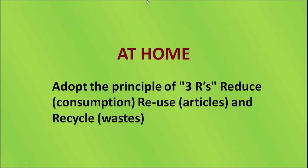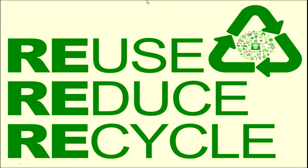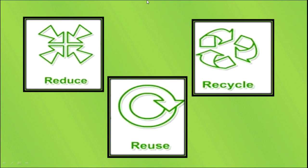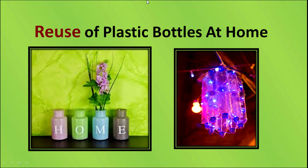At home we can adopt the principle of the three R's: reduce consumption, reuse articles, and recycle wastes. The three R policy helps to prevent environmental pollution. The three R's are reuse, reduce, and recycle. We can use such practices at home by reusing plastic bottles in the ways depicted — for example, old plastic bottles can be used for growing plants and making lampshades.